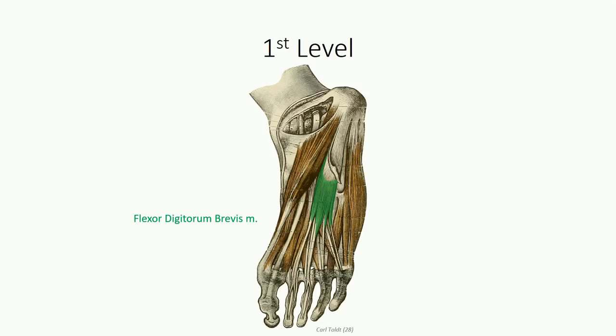It generates four tendons that bifurcate to insert on either side of the base of the middle phalanges, similar to what we saw with flexor digitorum superficialis of the forearm. It's responsible for flexion of digits 2 through 5 at the proximal interphalangeal joint. Next, we see abductor hallucis, found in the medial compartment originating off the medial part of the tuberosity. It inserts along the medial surface of the base of the proximal phalanx of the first digit, and as the name implies, it abducts and flexes the first digit.